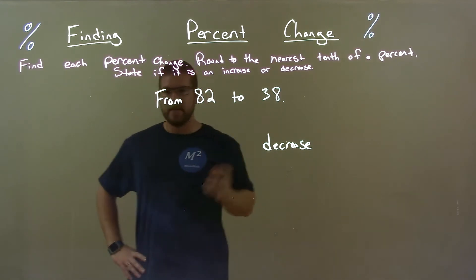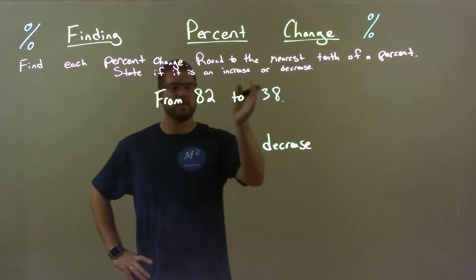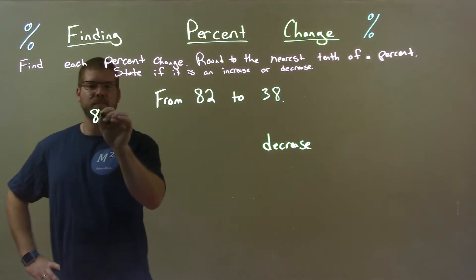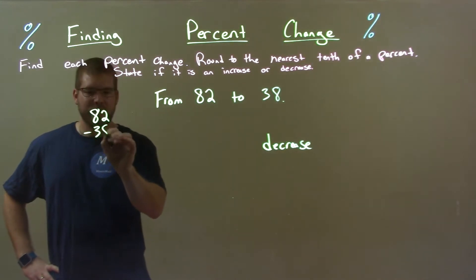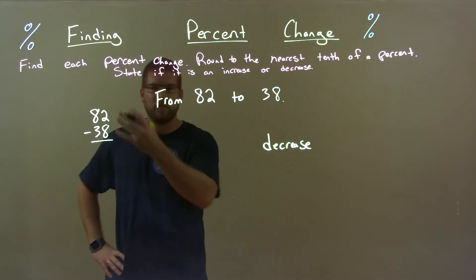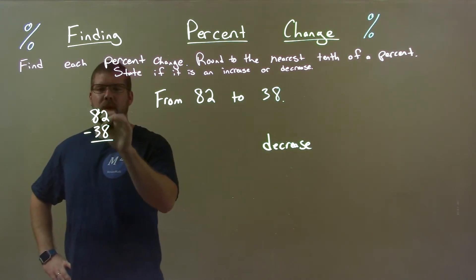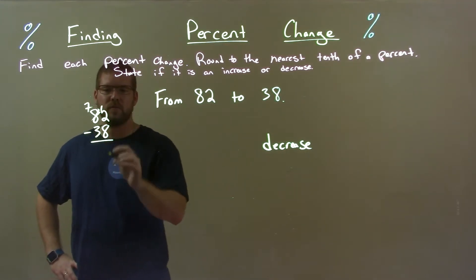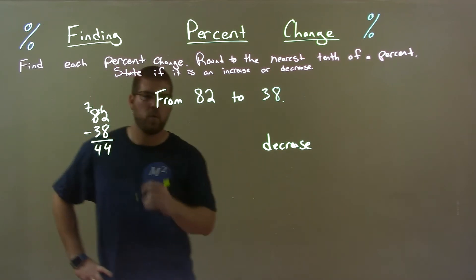Now I need to find the difference between these two. Largest number subtracted by the smallest. So 82 minus 38. Let's do that. 8 here is 7, borrow 12, 2 to 12. 12 minus 8 is 4. 7 minus 3 is 4. We got 44.